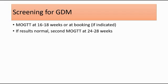For the screening for GDM, we usually do MOGTT, which is the Modified Oral Glucose Tolerance Test, done at 16 to 18 weeks, or during the booking visit if there are indications. If the first test results are normal, the second MOGTT will only be repeated at 24 to 28 weeks.